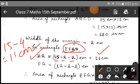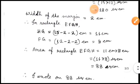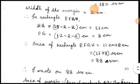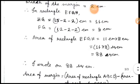Similarly, for the breadth: 12 is the breadth of the external rectangle, so 12 minus 4 equals 8 centimeters — because 2 from the top and 2 from the bottom. Now you can find the area of the interior rectangle, which is 11 centimeters into 8 centimeters, equals 88 square centimeters. So your answer is: I wrote on 88 square centimeters.